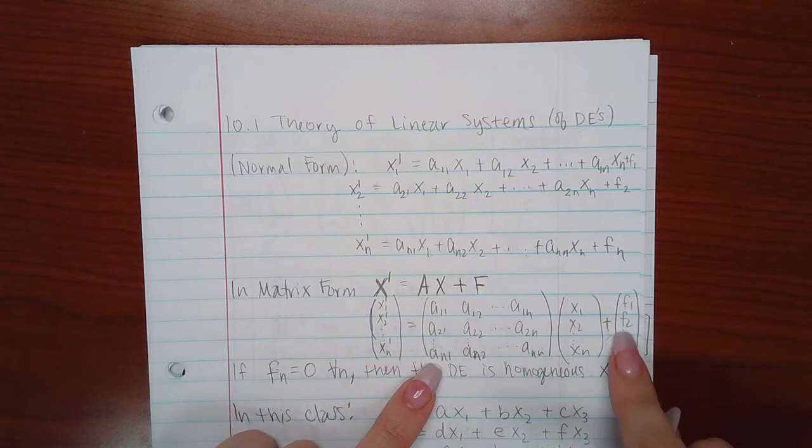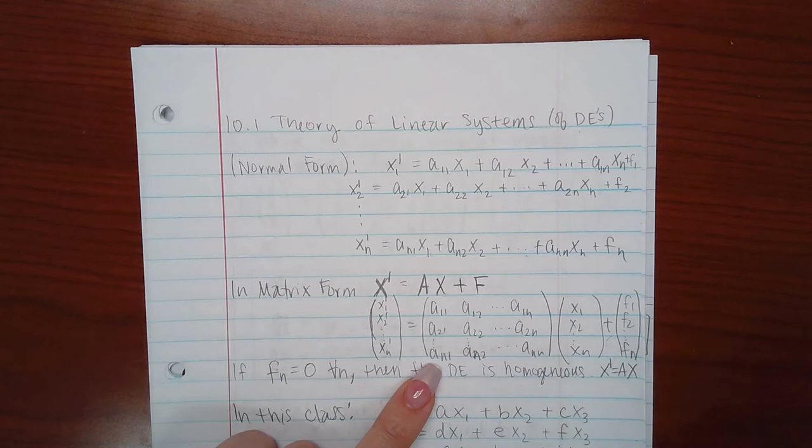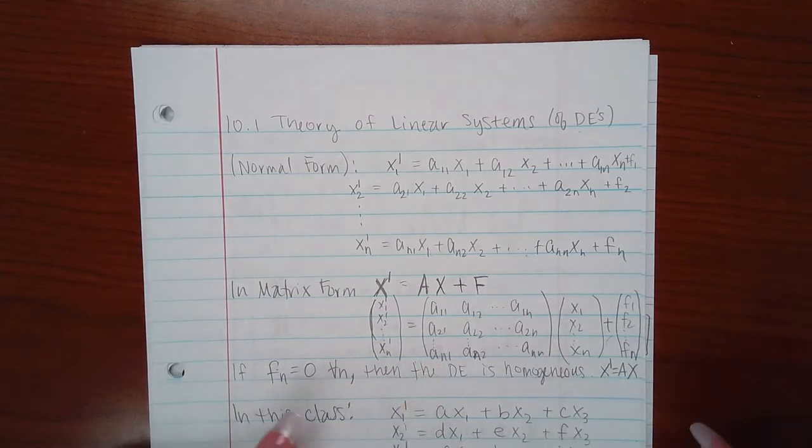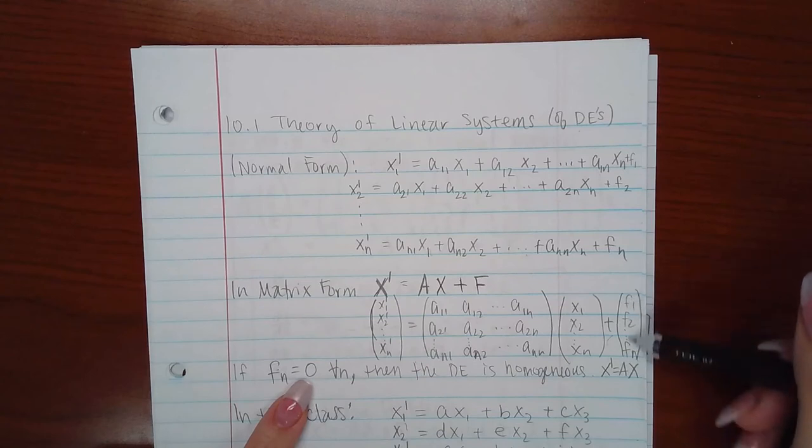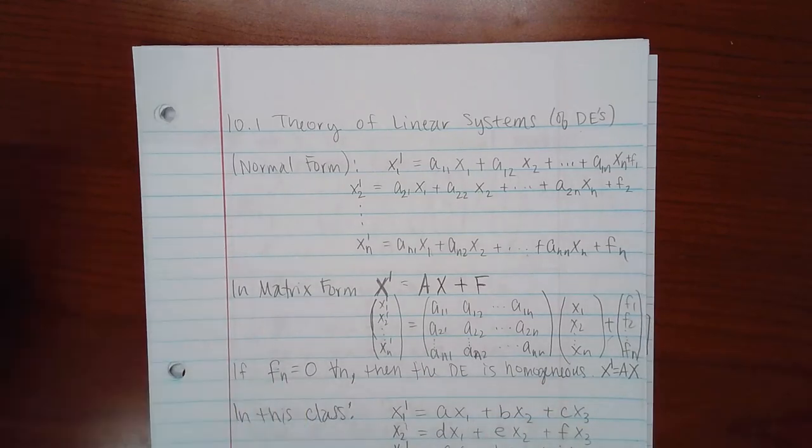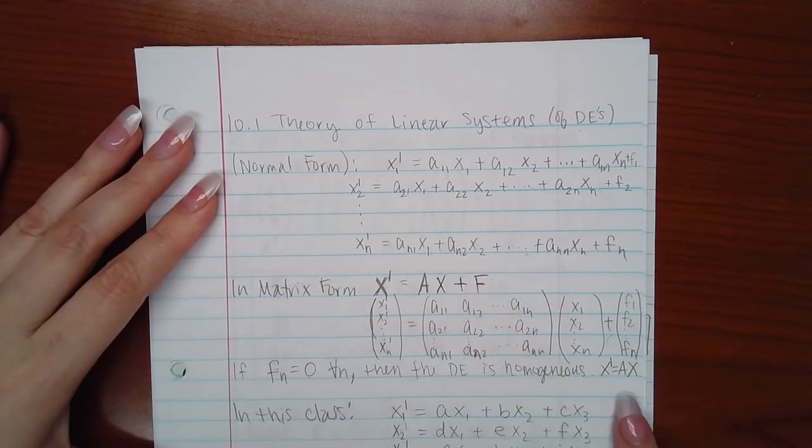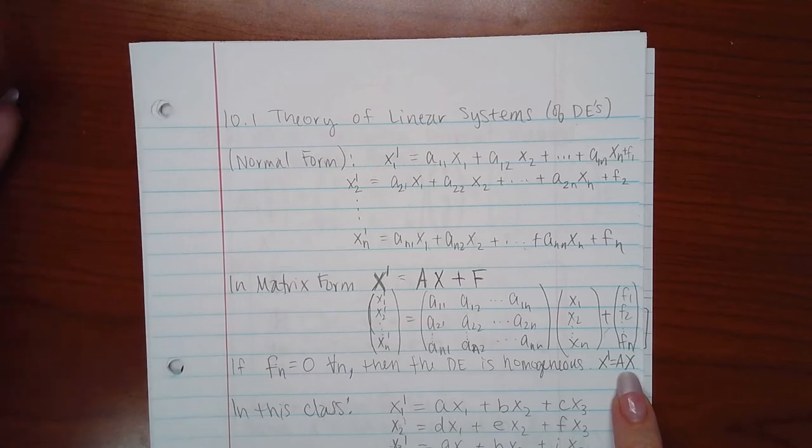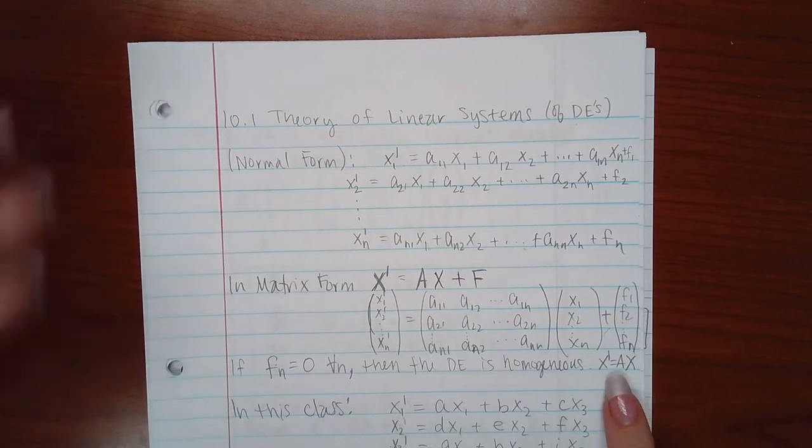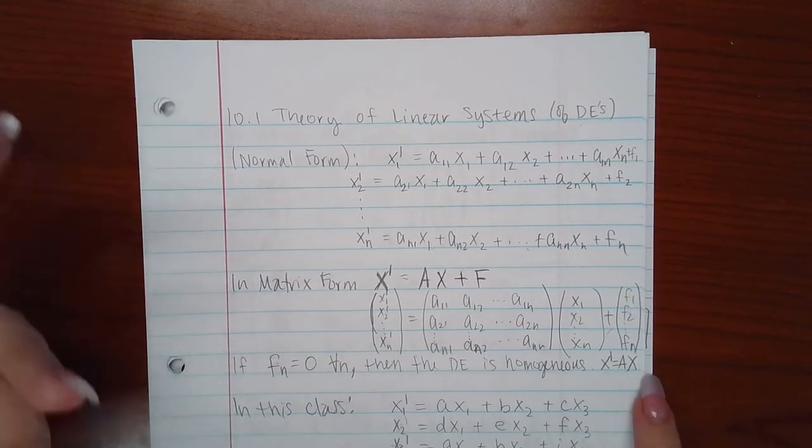And then you may have some other terms that don't have X1, X2, Xn in them, and those are considered your functions F. Now if there are no parts here, then that means they're all zero, which means the DE is homogeneous. Okay, and then in that case you wouldn't have this part here because they'd all be zero. So your matrix would just look like or your system would just look like this with all vectors.